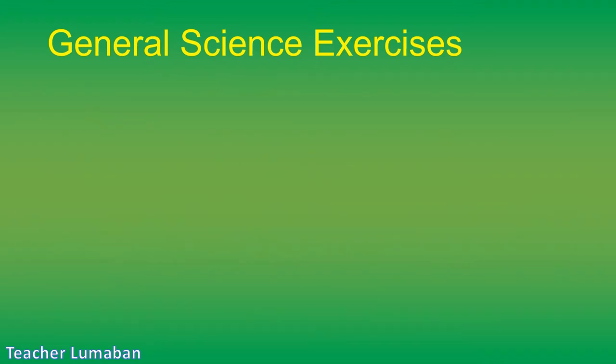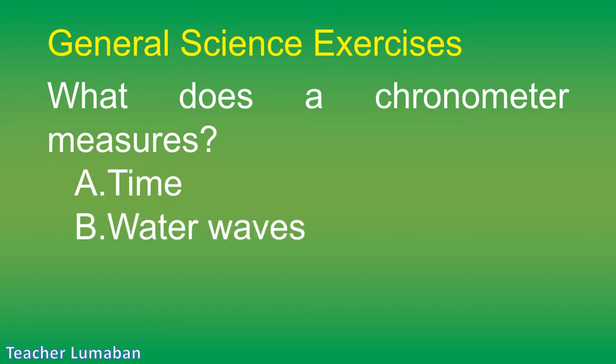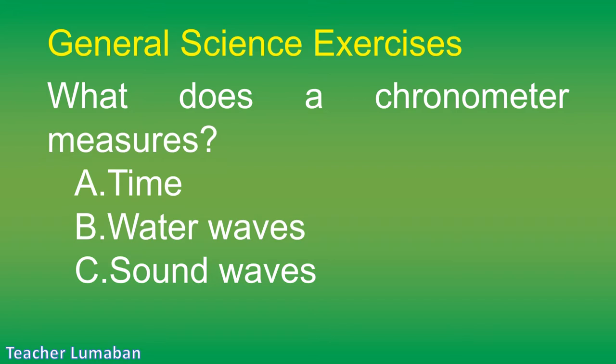What does a chronometer measure? Letter A: time. Letter B: water waves. Letter C: sound waves. Letter D: color contrast.